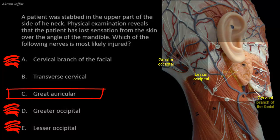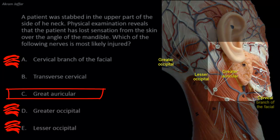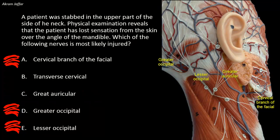The great auricular nerve is derived from C2 and C3. It passes vertically upwards over the sternocleidomastoid and is distributed to an area of skin over the angle of the mandible, as well as the auricle below the external acoustic meatus. It is the only cutaneous branch on the face not derived from the trigeminal nerve. So the great auricular is the nerve that supplies the skin over the angle of the mandible and is the most likely injured.